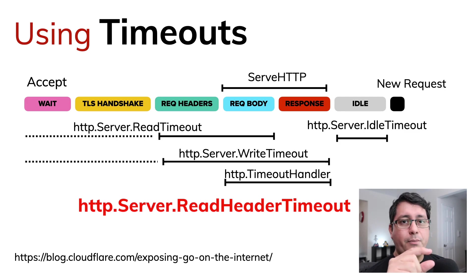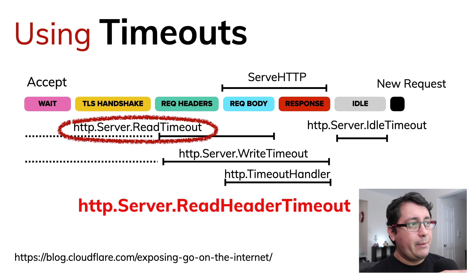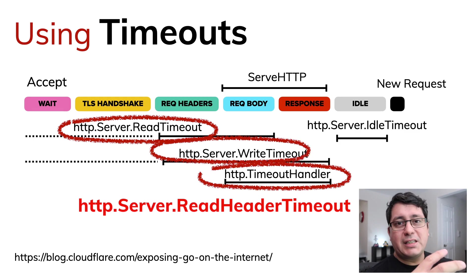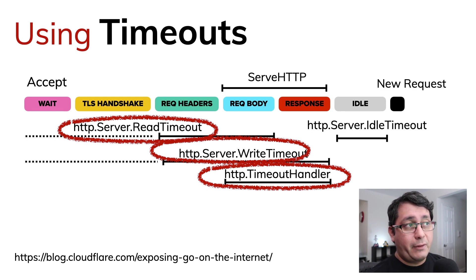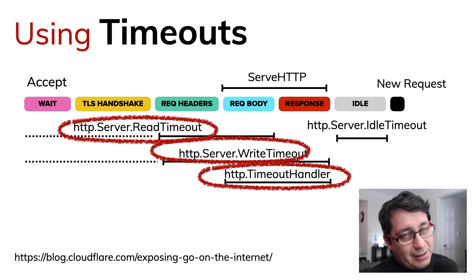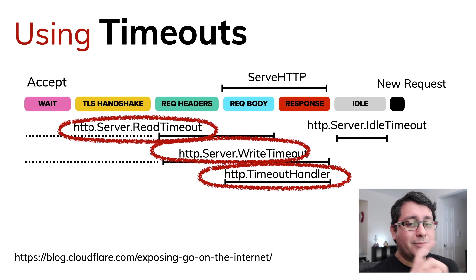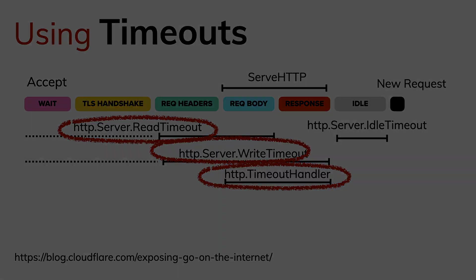There are different rules we can use to prevent issues when reading and sending data back to our clients. I want to show you examples using all these different timeouts, and you'll see why it's really important to define values when using the net/http Server type in Go. Let's jump into the code.